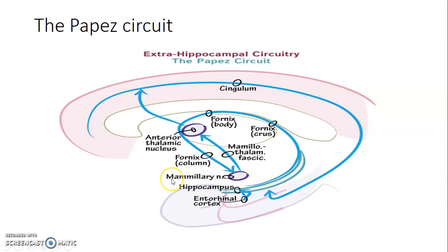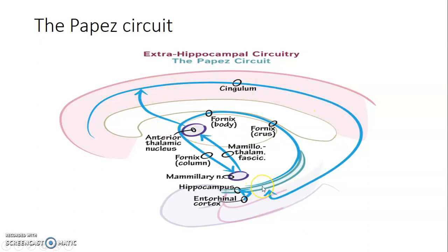So this is what we call the Papez circuit — it's how information communicates between the different components of the limbic system. Beginning from the entorhinal cortex — remember the entorhinal cortex is formed by the parahippocampus and uncus — this will communicate with the hippocampus. The hippocampus is connected to the fornix via the fimbria, then the crus of the fornix, the posterior crus, the body, then the anterior crus, that brings information to the mammillary body of the hypothalamus. These mammillary bodies then send information to the anterior nucleus of the thalamus, which sends information to the cingulum within the cingulate gyrus, and this brings it back to the hippocampus.